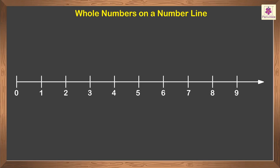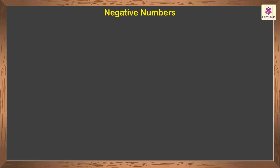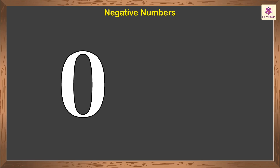Now mark points two, three, four, and so on to the right side of point one at unit distance. This is how the number line will look when we represent the whole numbers starting from the point zero.